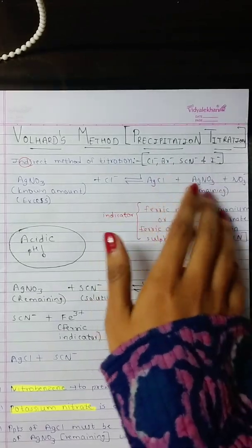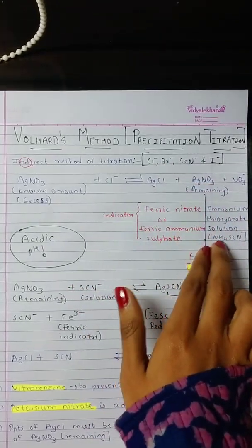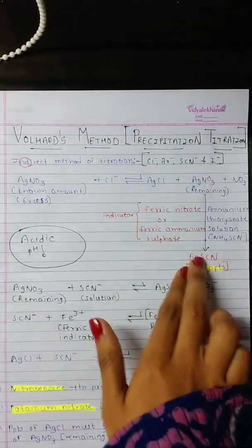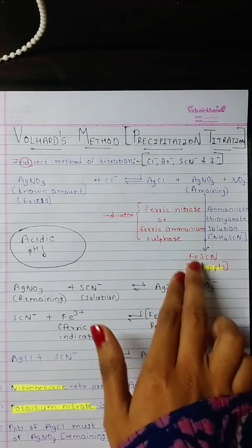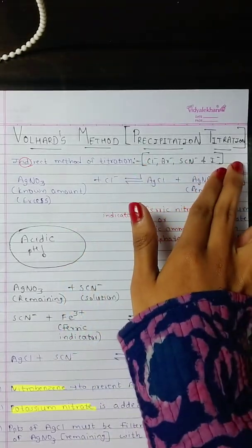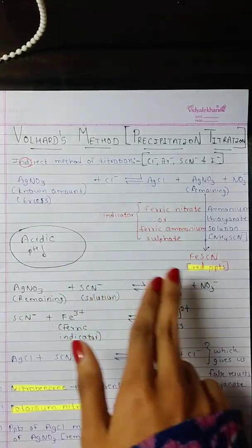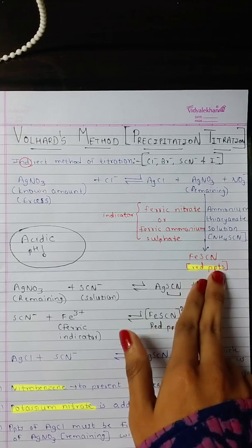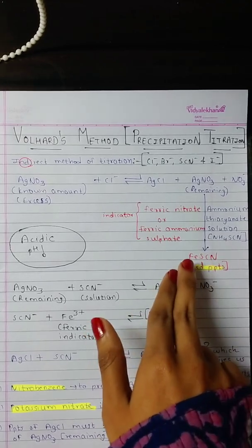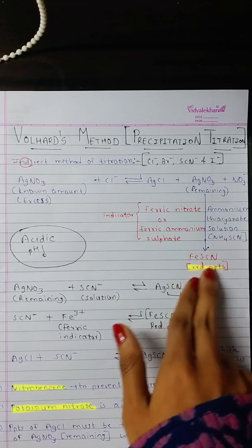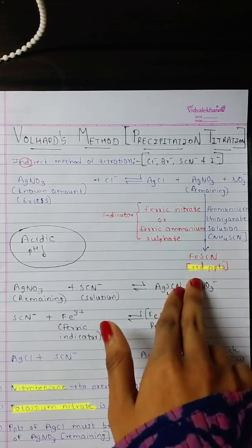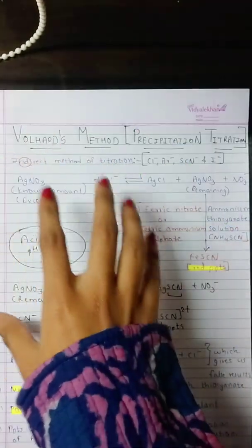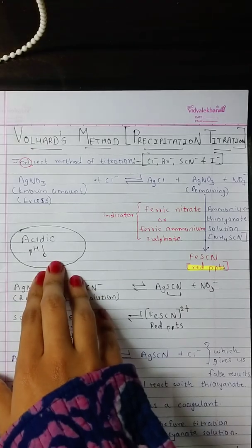This remaining AgNO₃ is then reacted with a solution of ammonium thiocyanate with an indicator. This reaction is a back titration and gives red precipitates. As it is a precipitation titration, precipitates are obtained to determine the endpoint. The red color precipitates of ferric thiocyanate indicate the endpoint of the reaction. This entire reaction takes place under acidic pH.